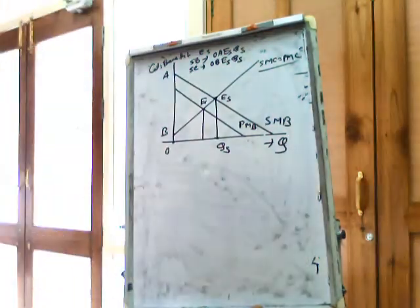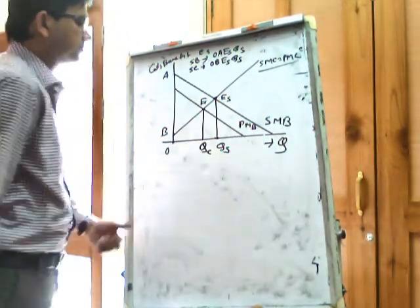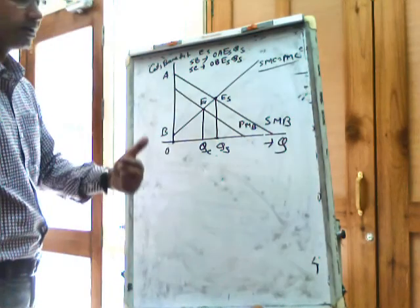But actually the market clearing level of output is OQC. So EC is the market equilibrium.